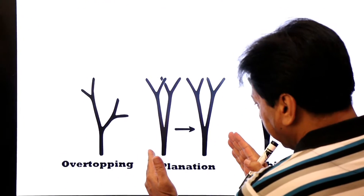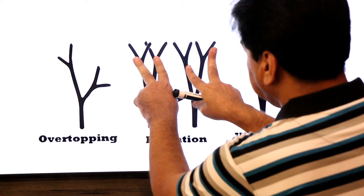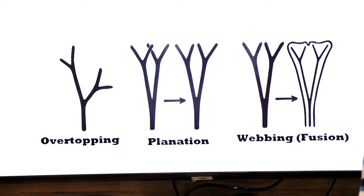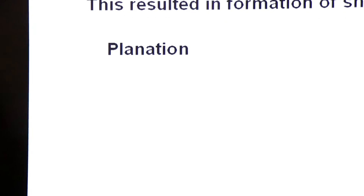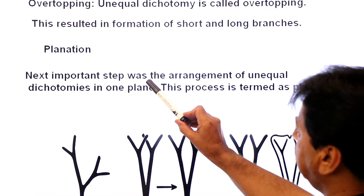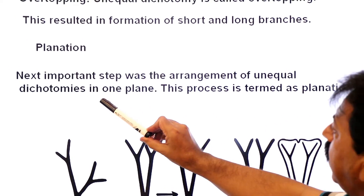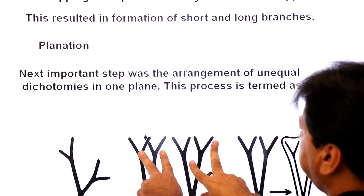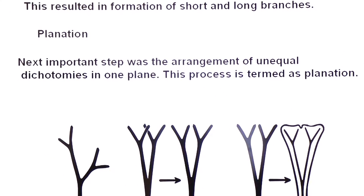The next important step was the arrangement of unequal dichotomies in one plane. These dichotomies come to lie in a single plane, and this process is termed planation.